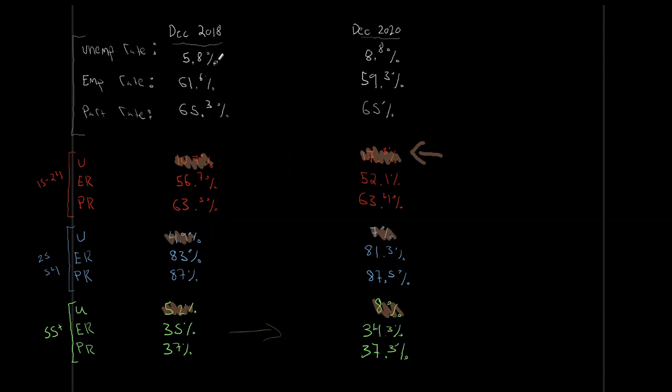The overall reported unemployment rate went from 5.8% to 8.8%, but hiding within that are very different numbers when broken down by demographic. Statistics Canada also collects and reports unemployment rates, employment rates, and participation rates by sex, by age demographic, and by education level — high school, post-secondary diploma, university degree, and even post-university degree for more recent years.